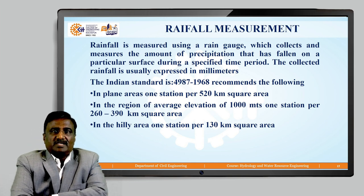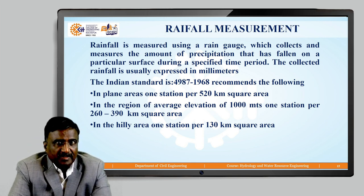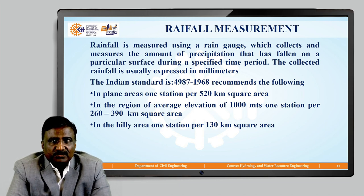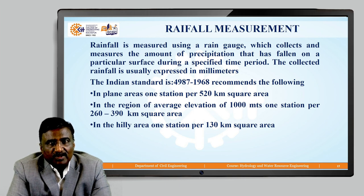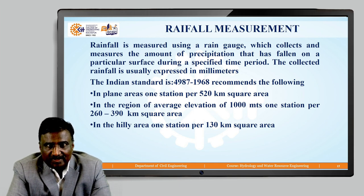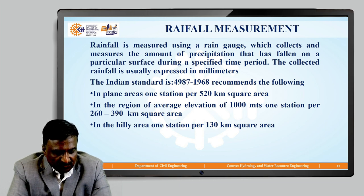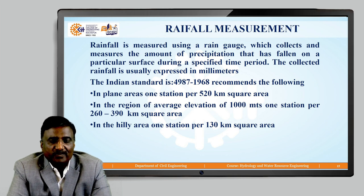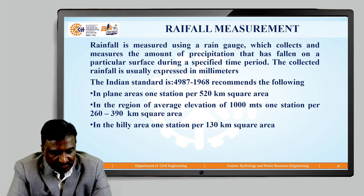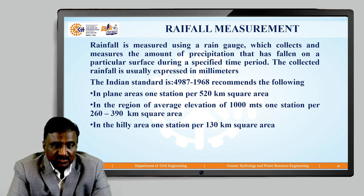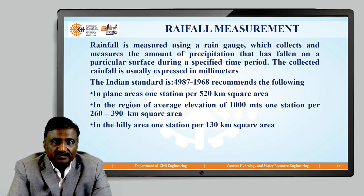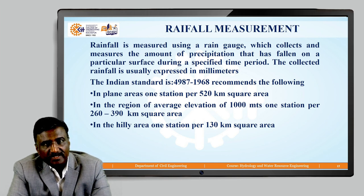Now we will move towards the second part, that is rainfall measurement. Rainfall is measured using a rain gauge, which collects and measures the amount of precipitation that has fallen on a particular surface during a specified time period. The collected rainfall is usually expressed in millimeters. The Indian Standard IS 4987 of 1968 recommends: in plain areas, one station per 520 km² area; in regions of average elevation of 1000 meters, one station per 260 to 390 km² area; and in hilly areas, one station per 130 km² area.